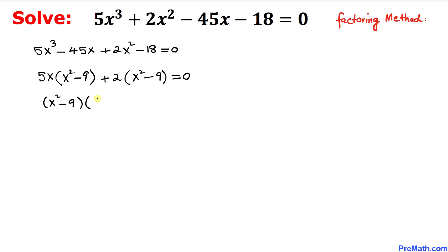So we can write this one as (x² - 9)(5x + 2) = 0. Since we got these two factors equal to 0, we can split them up and separate them.